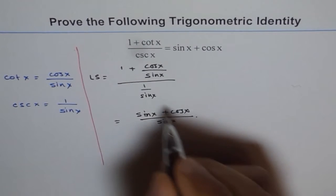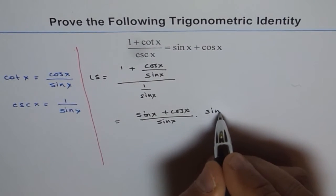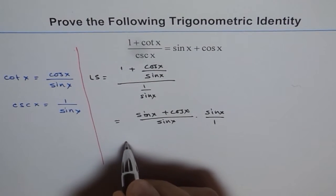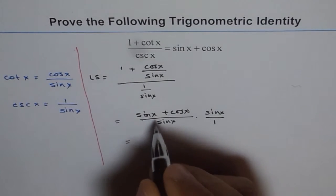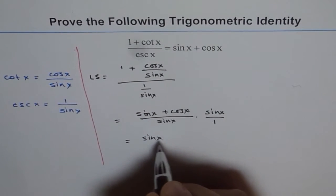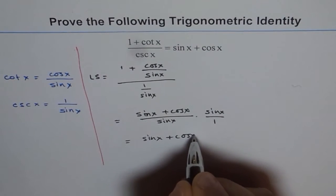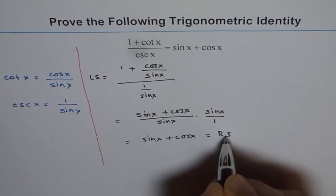And I'm flipping this over and writing this as sin x over 1. Now sin x and sin x cancel out and I am left with sin x plus cos x which is my right side.